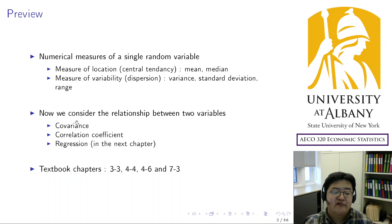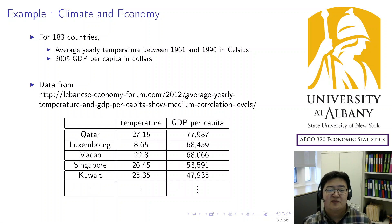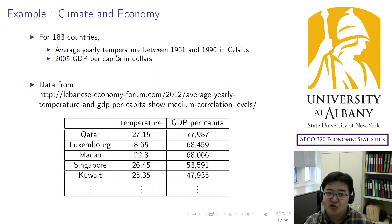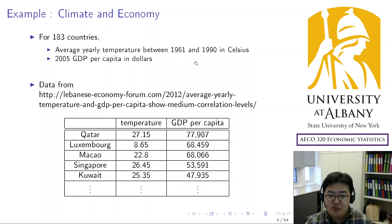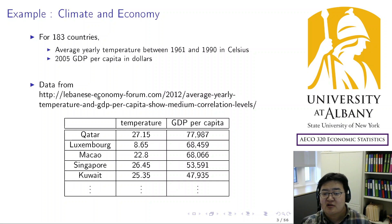Let me start with a real dataset. This data is about climate and economy. In the dataset, 183 countries are observed, and we observe their average yearly temperature measured in Celsius and also their 2005 GDP per capita in US dollars. I took it from an economic forum website.